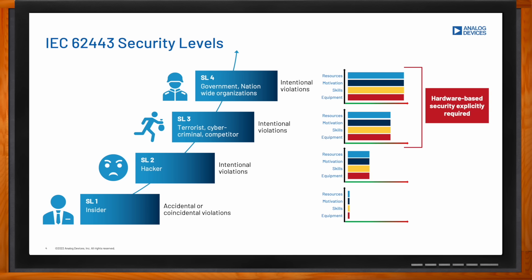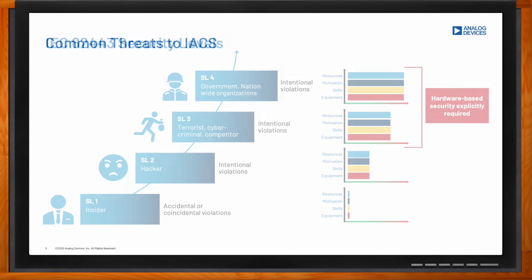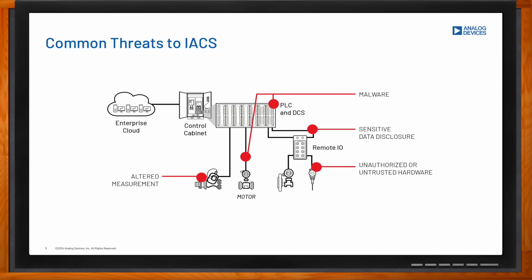The most common threats for industrial automation control systems include malware — some listeners may have heard of Stuxnet, a very famous virus — and the threat from malware such as viruses or worms remains very present and can lead to very harmful situations. Other threats include sensitive data disclosure, such as parameters related to an industrial recipe, as well as altered measurements where a sensor's data is tampered with on its way, and the usage of unauthorized counterfeit hardware.